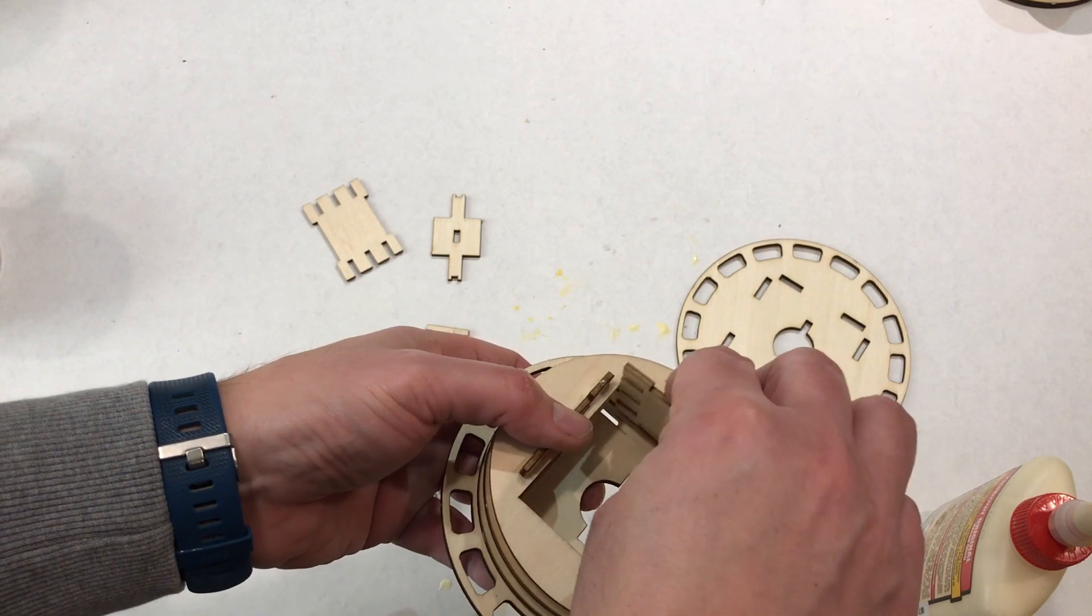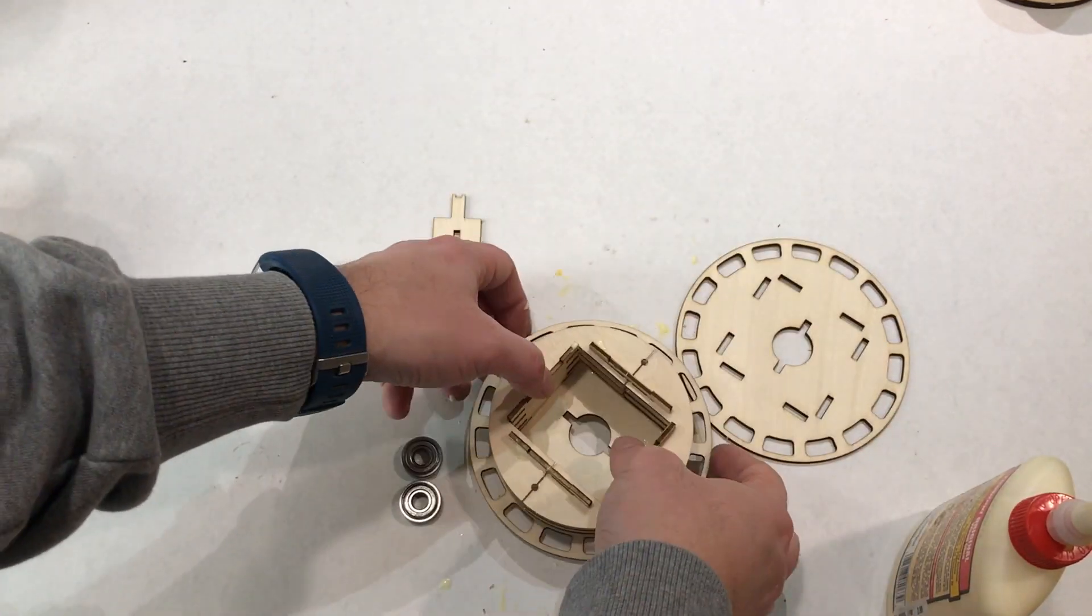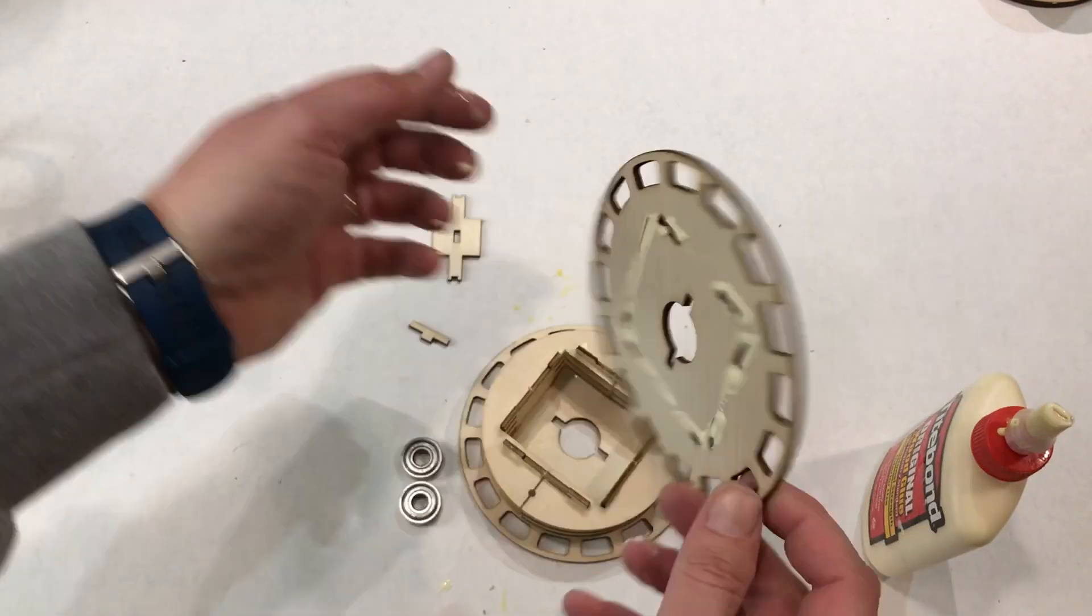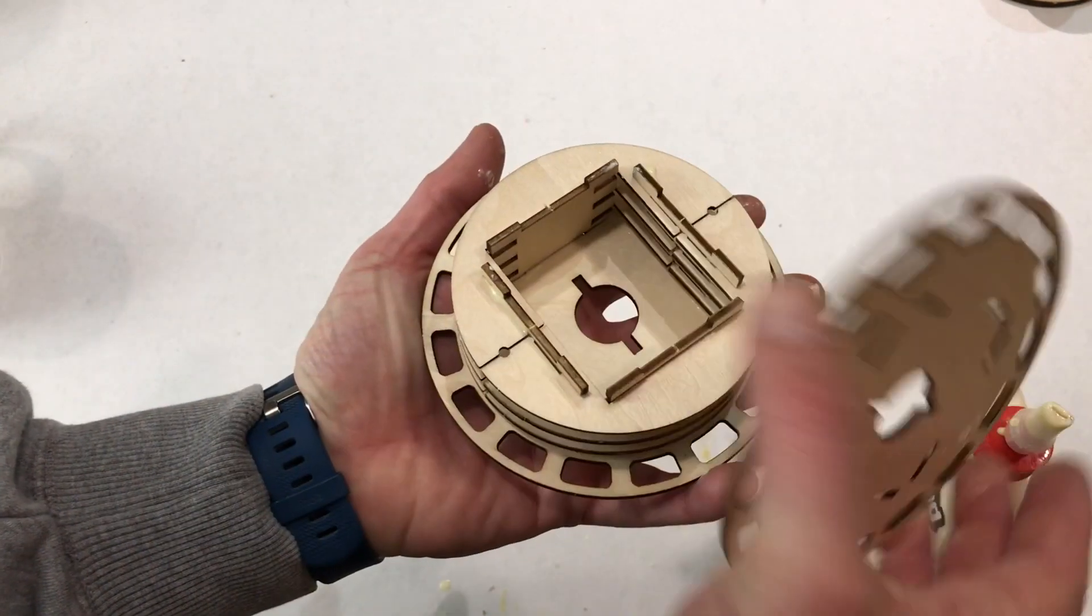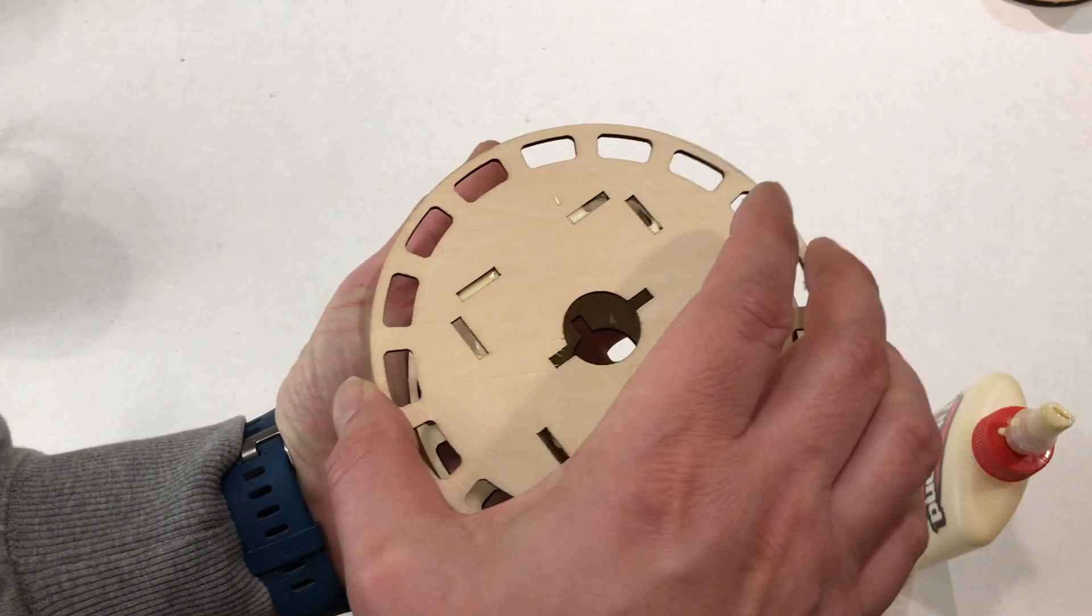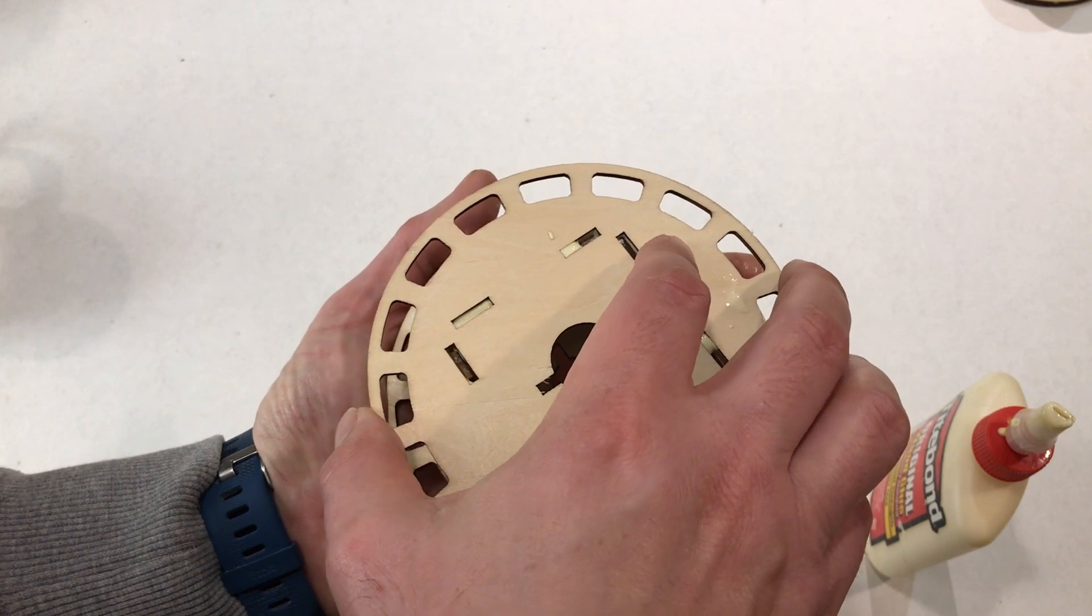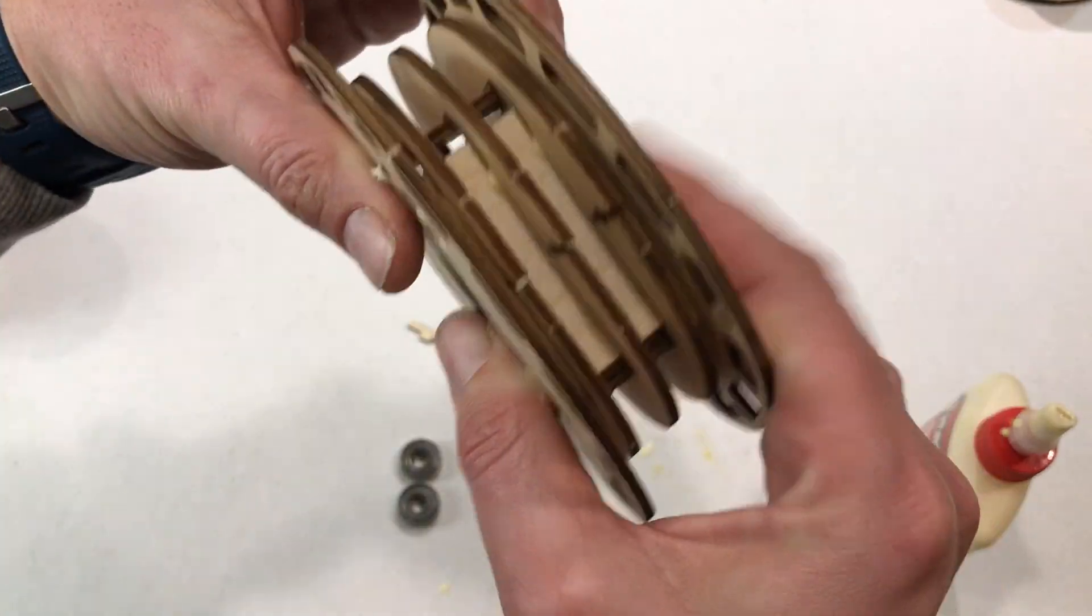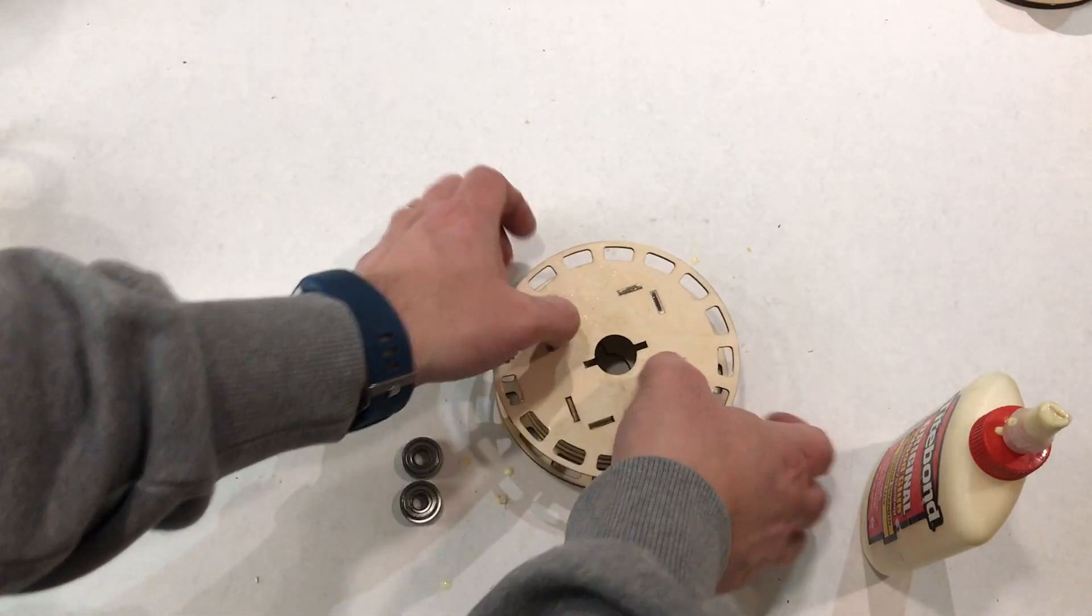And then we're going to put these additional pieces in. This is the tricky part, making sure we get everything prepared and lined up so that we can drop this on, and then lastly we're going to put the hub in.